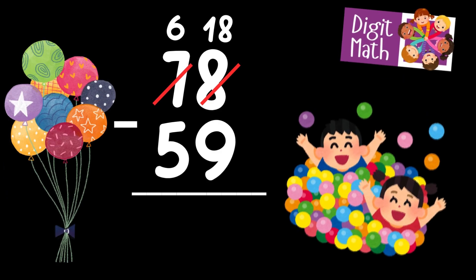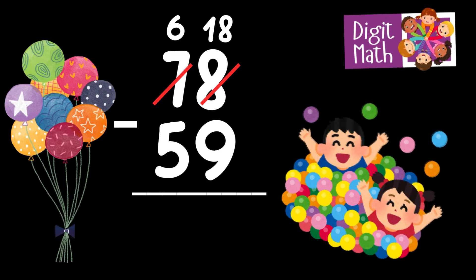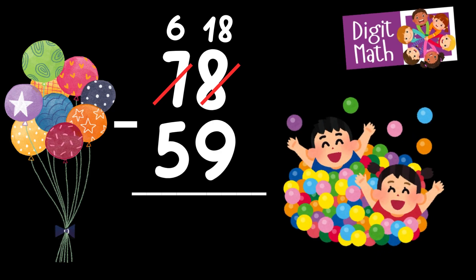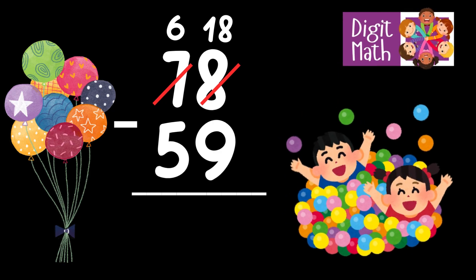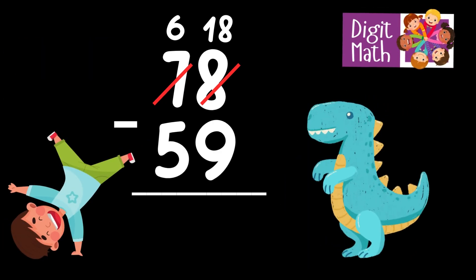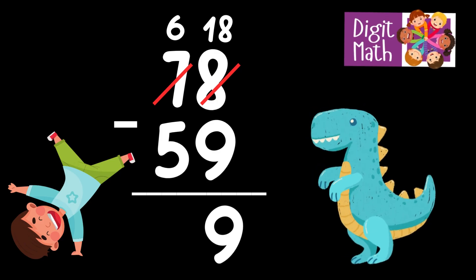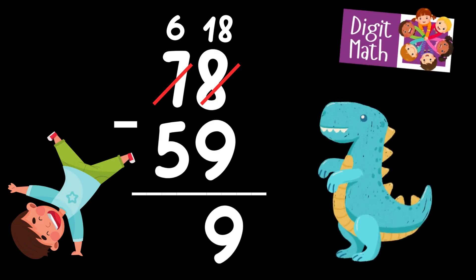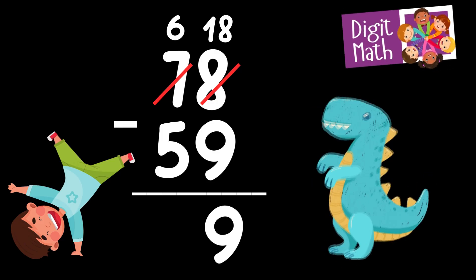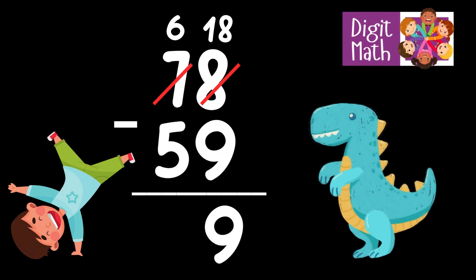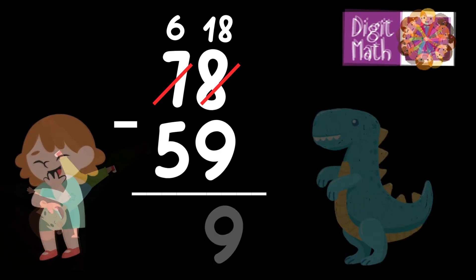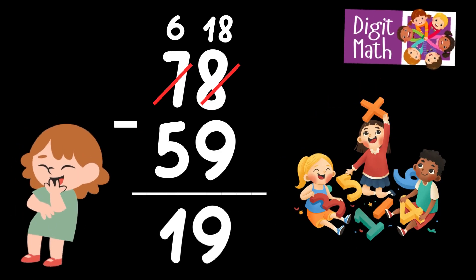Now we have 18 in the Units column. Subtract 9 from 18, which equals 9. In the Tens column, we now have 6. Subtract 5 from 6, which equals 1. So the final result is: 78 minus 59 equals 19.